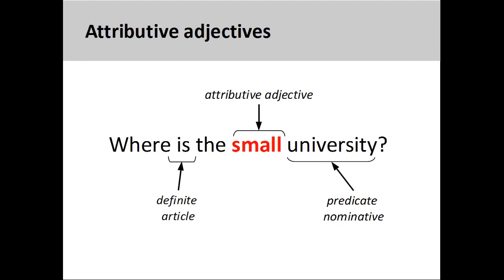Attributive adjectives are different than predicate adjectives in that they appear before the noun they modify. In this slide, the attributive adjective 'small' is placed between the noun 'university' and the definite article 'the.'